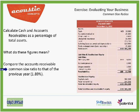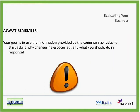Acoustic Concepts, turning from the previous year to the current year in receivables, has so much cash in the market that they need to collect. Always remember, your goal is to use the information provided by the common size ratios to start asking why changes have occurred and what you should do in response. If the profit margins have declined unexpectedly, for example, you probably will want to examine the expenses to see what went wrong. Using the common size ratio for expense lines will help you spot significant changes that affected your profit margin.